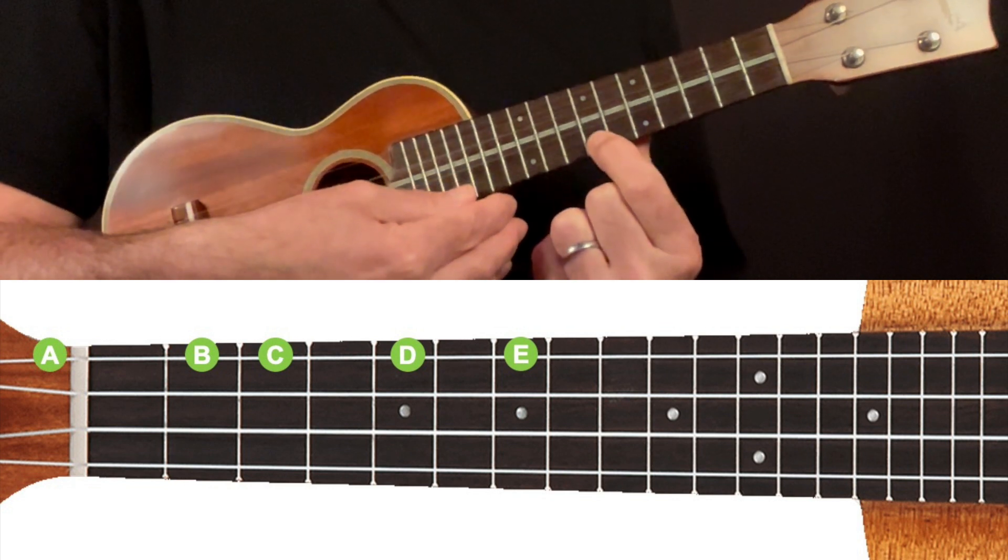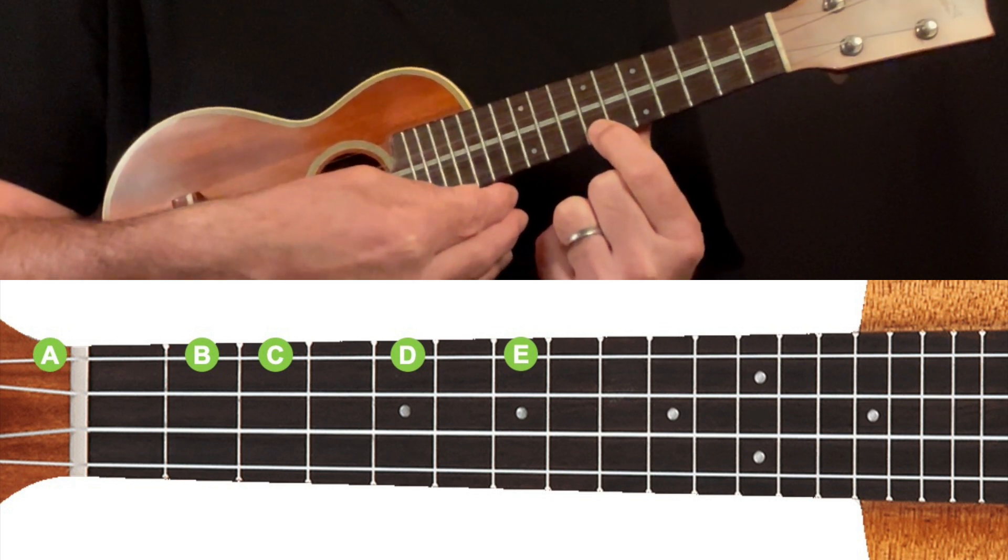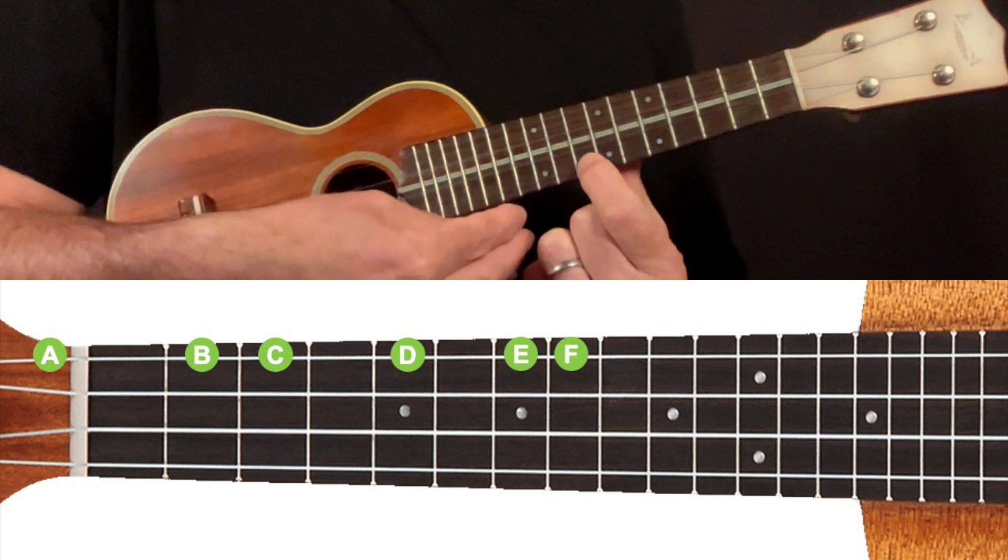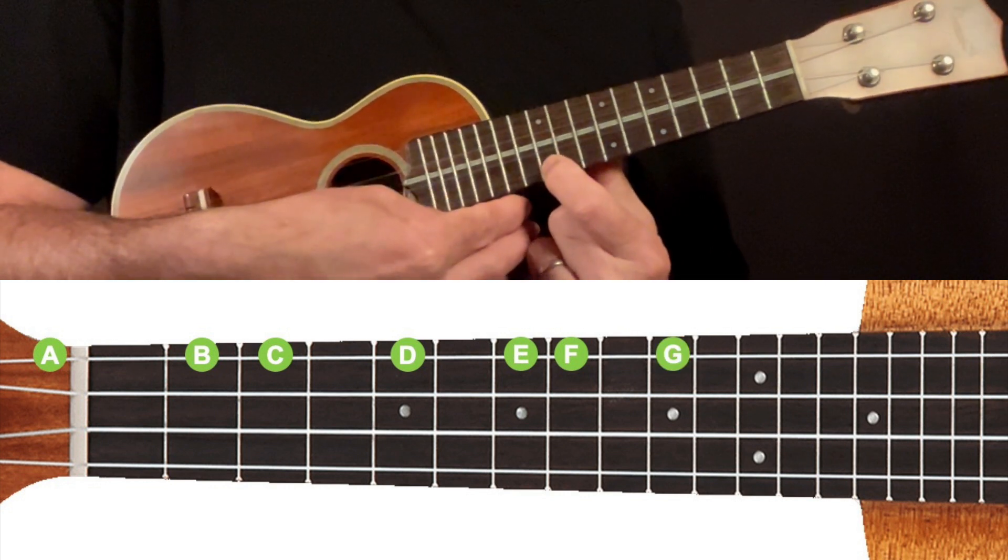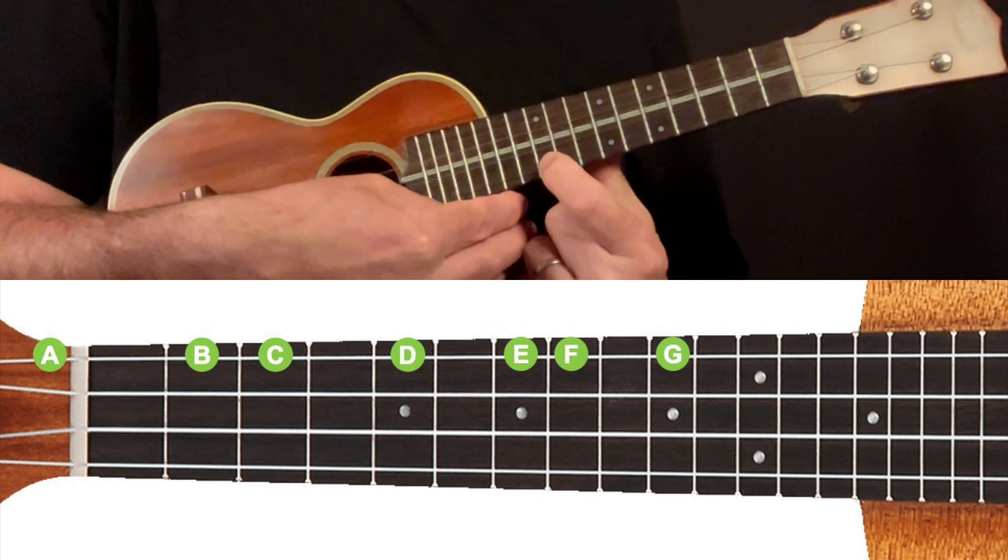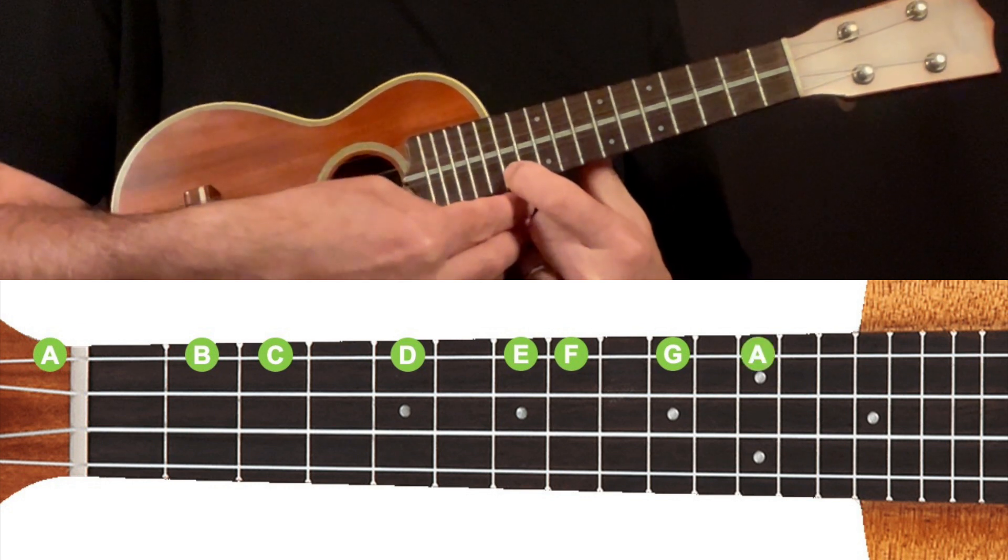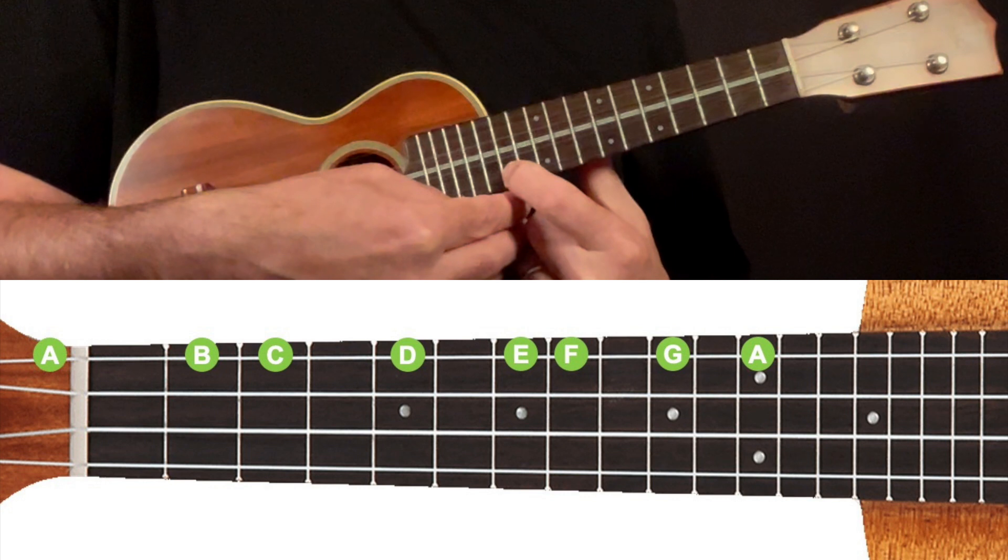D at the fifth fret, E at the seventh fret, F at the eighth fret, G at the tenth fret, and finally A, an octave of the A we started on at the twelfth fret.